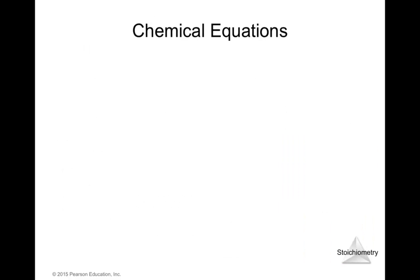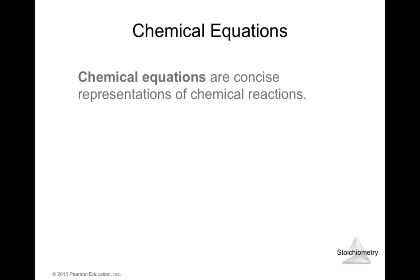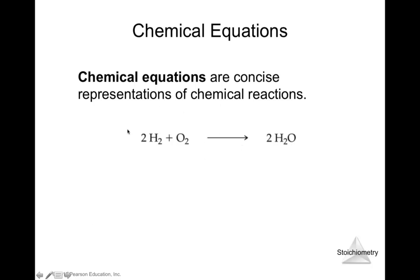Let's introduce chemical equations. Chemical equations are concise representations of chemical reactions. For example, two moles of hydrogen plus one mole of oxygen will produce two moles of water. The arrow marks the difference between what we have at the beginning and what we have after the reaction — reactants on the left, products on the right.